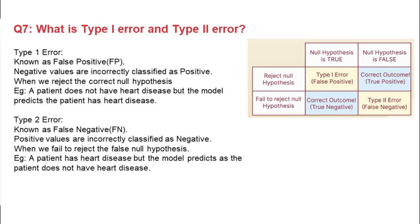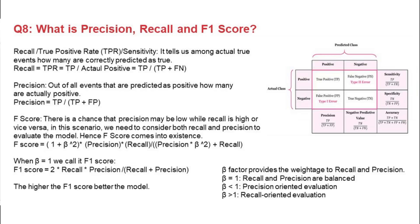Type 2 error is known as false negative — positive values are incorrectly classified as negative, meaning we fail to reject the false null hypothesis. For example, a patient has heart disease but the model predicts the patient does not have heart disease.